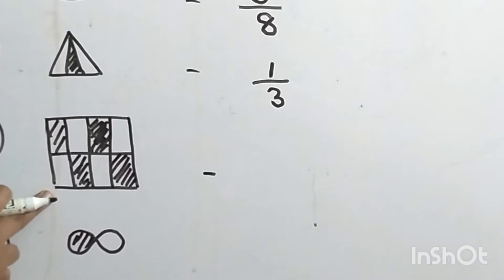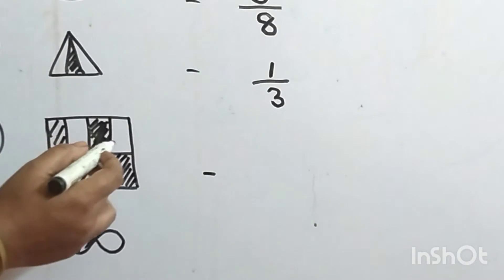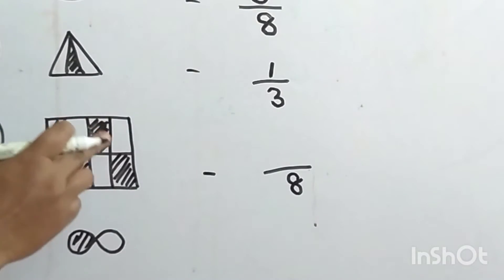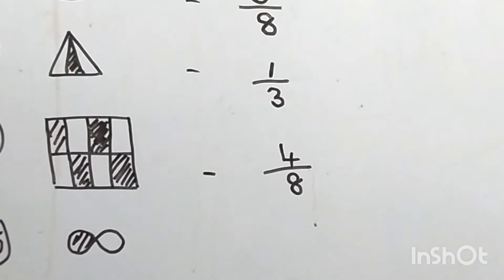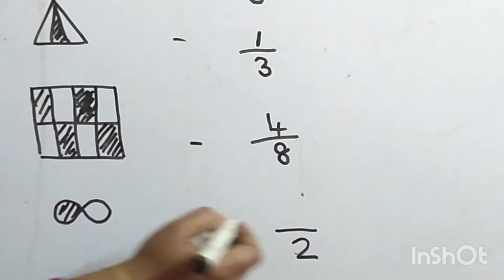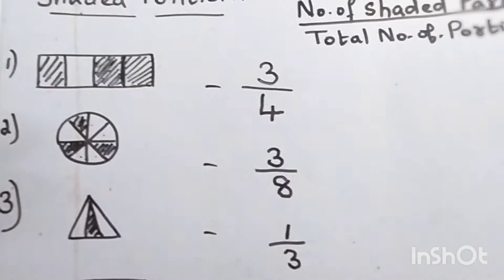The next one — I want you all to guess and tell me. What is the fraction for this figure? Total number of parts: 1, 2, 3, 4, 5, 6, 7, 8 — so 8 at the bottom. How many parts are shaded? 1, 2, 3, 4 — four parts are shaded. So 4 by 8 is the fraction. And this one: 2 parts total, one part is shaded — so 1 by 2. This is how we write the fraction for the shaded part.